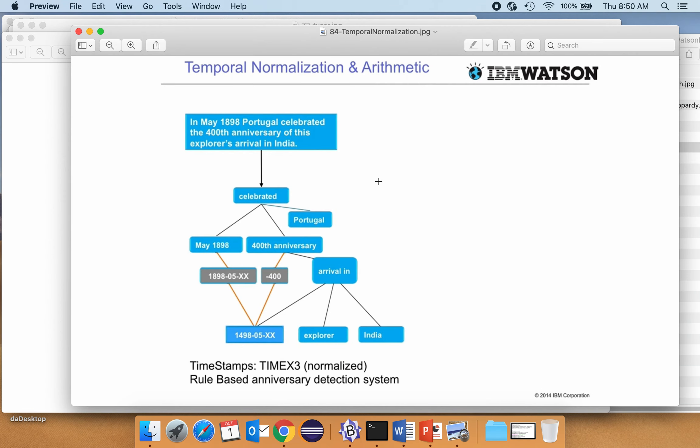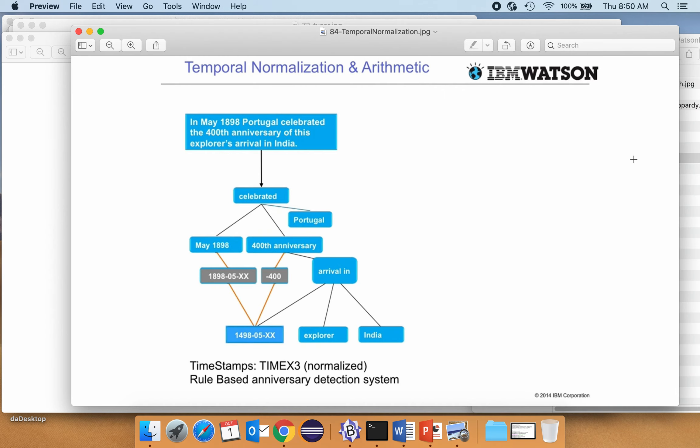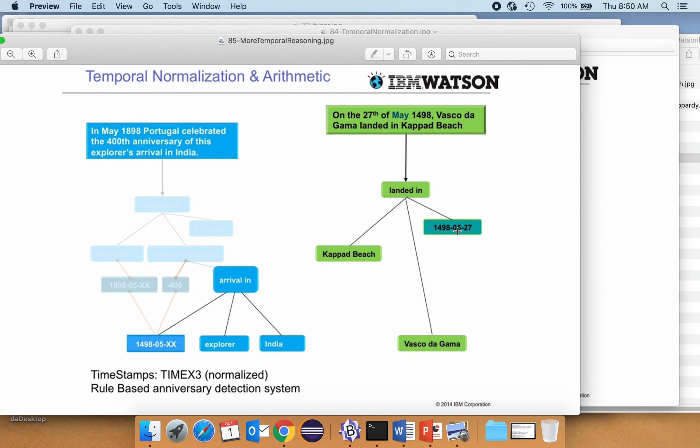Just a little bit more detail about temporal normalization. So if we have a 400th anniversary, we saw like do the math to get to something like this. So that's temporal normalization. Let's see what else. Here's the temporal reasoning that we then do, where we realize that 27 is a correct instantiation of XX.